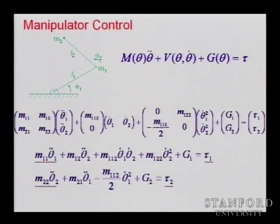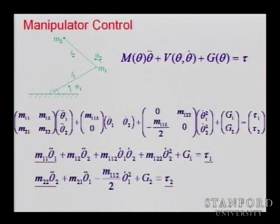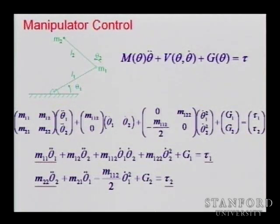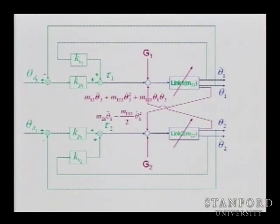We have opposing forces from the acceleration of joint one on joint two. On joint two, you can immediately recognize centrifugal forces — square of velocities — and Coriolis forces — product of velocities — and gravity forces. All of these will impact the robot, and it's really difficult to treat them as zero or as disturbances. As you accelerate one joint, you have an effect on the other. So the controller controlling a single link will receive disturbances from gravity and from the motion of the other link.